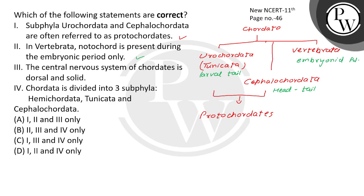Statement III says the central nervous system of chordates is dorsal and solid — this is incorrect. The CNS of chordates is dorsal but hollow, not solid. Statement IV says Chordata is divided into 3 subphyla: Hemichordata, Tunicata, and Cephalochordata — this is also incorrect, as the correct subphyla are Urochordata, Cephalochordata, and Vertebrata.